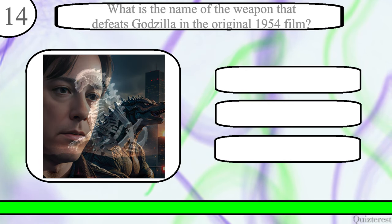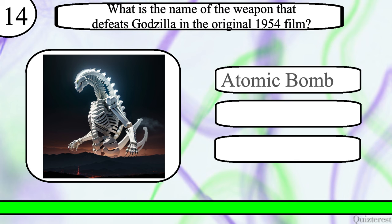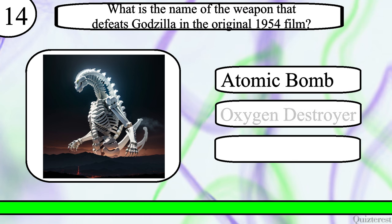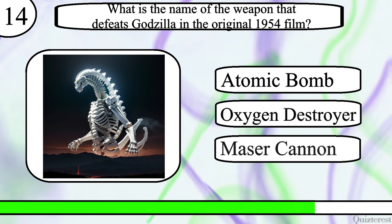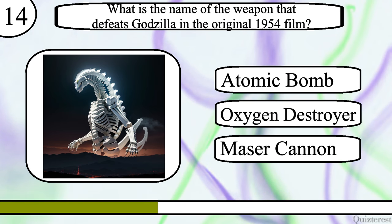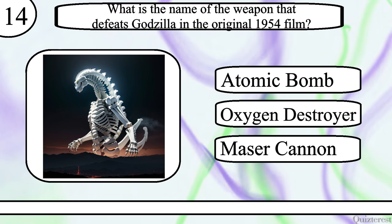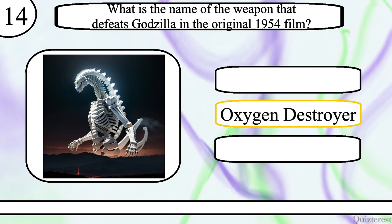Question 14. What is the name of the weapon that defeats Godzilla in the original 1954 film? Atomic Bomb, Oxygen Destroyer, or Maza Cannon? The correct answer is Oxygen Destroyer.